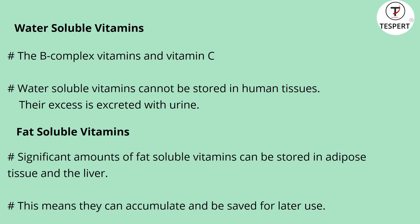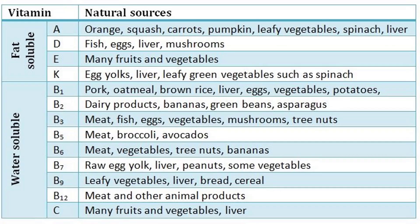Fat soluble vitamins are different compared to water soluble ones. When you see people who are fat, it means the body has stored fat — the body is storing whatever amount it wasn't using into the tissues and the liver. This means fat soluble vitamins can accumulate and be saved for later use.